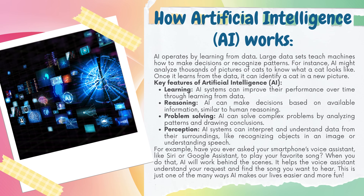Now we will discuss how Artificial Intelligence, AI, works. AI operates by learning from data. Large data sets teach machines how to make decisions or recognize patterns. For instance, AI might analyze thousands of pictures of cats to know what a cat looks like. Once it learns from the data, it can identify a cat in a new picture.